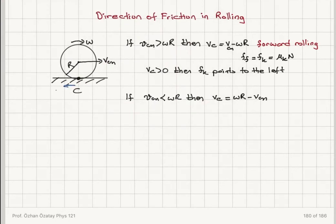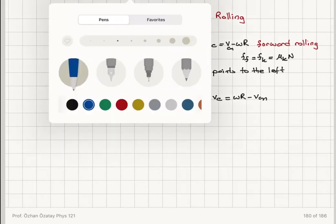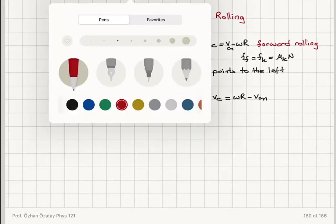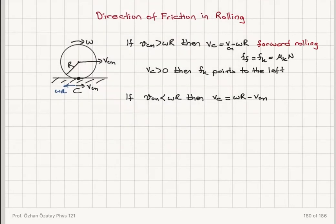Due to the rotation, there is a component ωR to the left, and due to the center of mass translation, v_cm to the right. Since ωR is greater than v_cm, there is a net velocity of the contact point to the left. This is backward rolling.